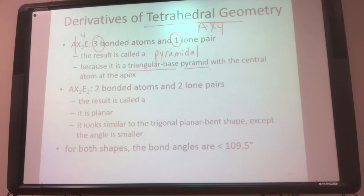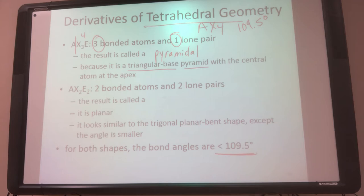Let's talk about what the bond angle would be. Tetrahedral's perfect bond angle was 109.5°. The lone pair is going to push everything together, so our bond angle is going to be less than 109.5°. This is my subgroup for our tetrahedral.